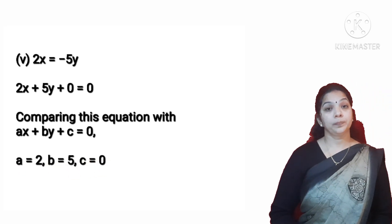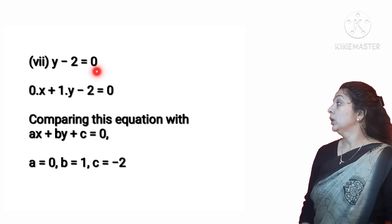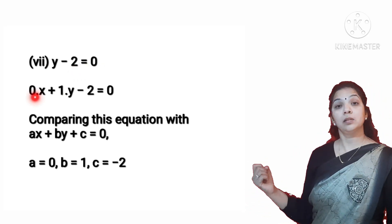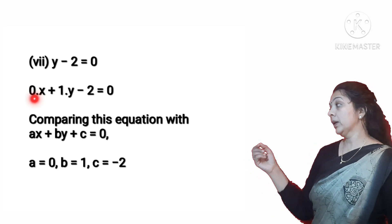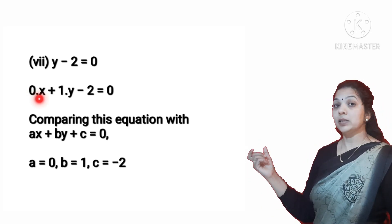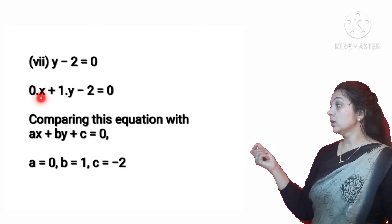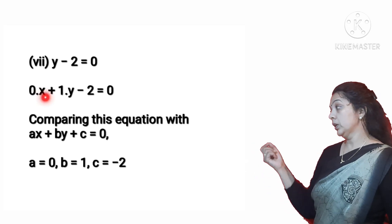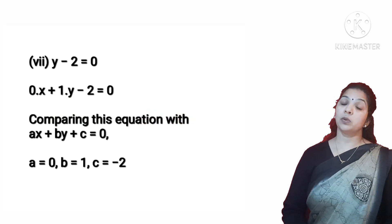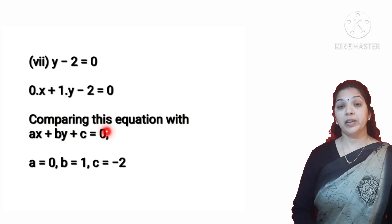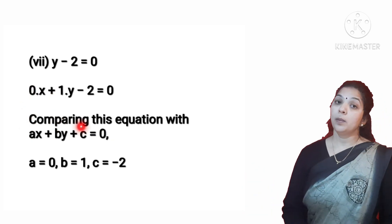The seventh part is Y minus 2 = 0. Here the X term is missing, so we write it as 0 multiplied by X plus Y minus 2 = 0. Comparing with AX + BY + C = 0, we get A = 0, B = 1, and C = minus 2.